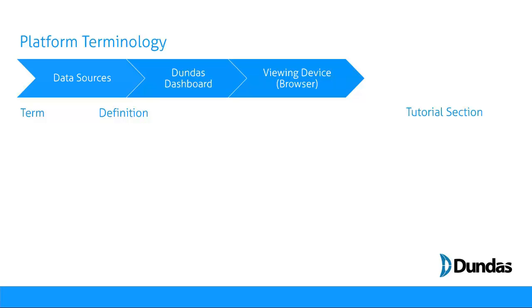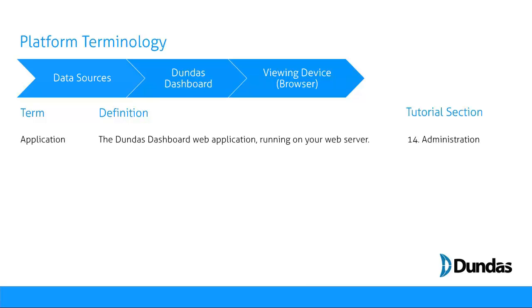With regard to the platform and the three layers involved in developing dashboards — your data sources, our platform Dundas Dashboard, and your users' viewing devices — there are a few terms you'll need to know. When we refer to the application, we're talking about Dundas Dashboard. This is a web application that runs on your Microsoft web server and is exposed through IIS. You'll learn about administrating this application in Section 14.